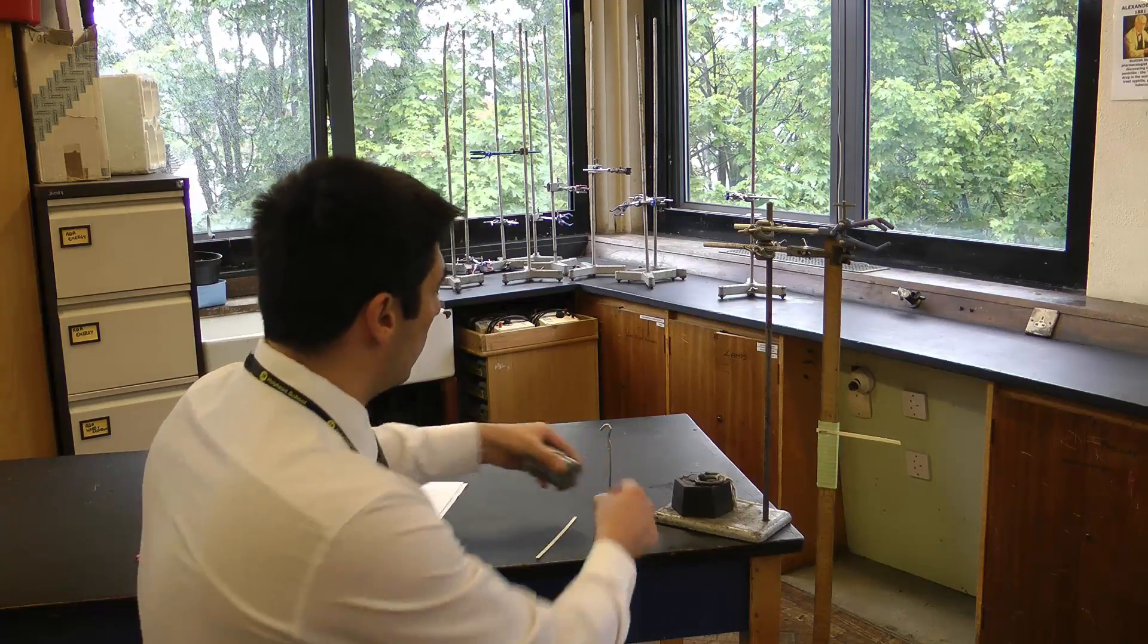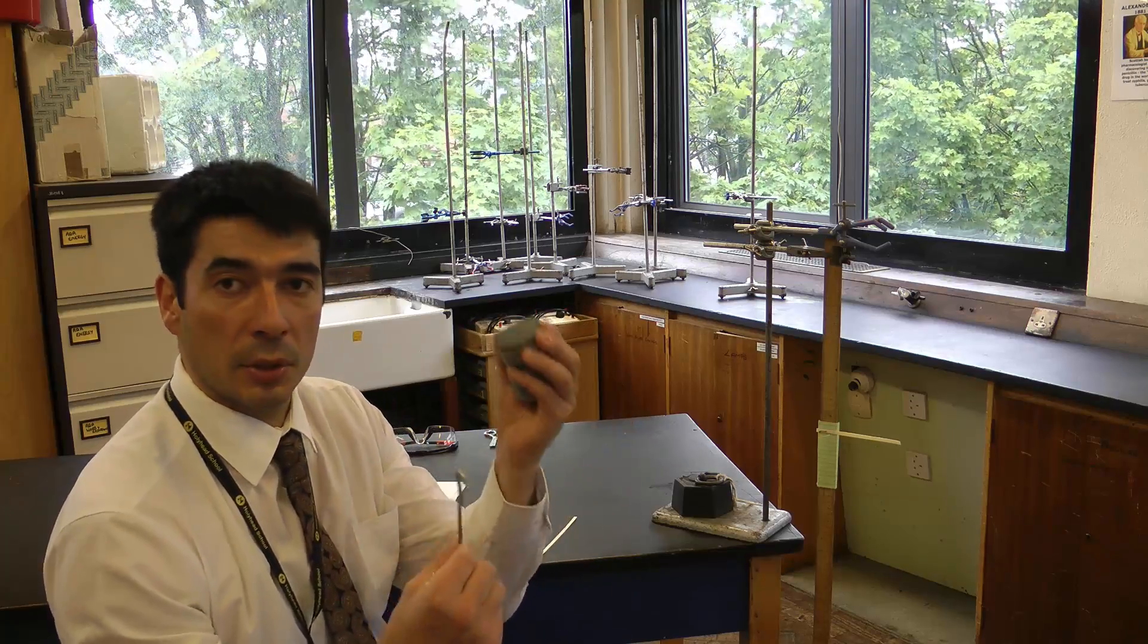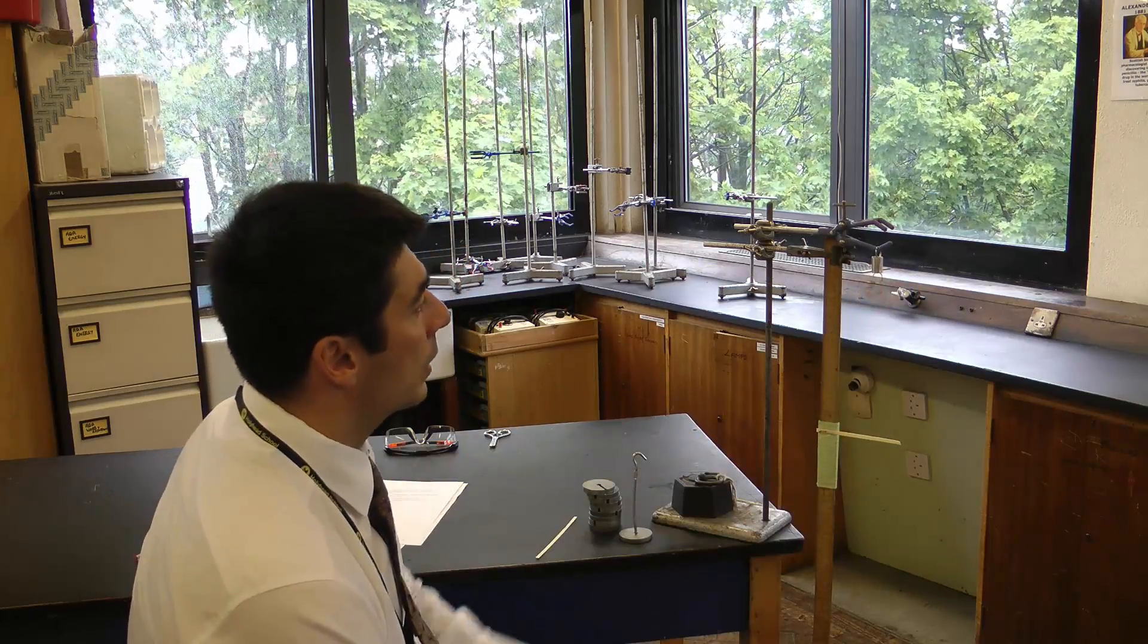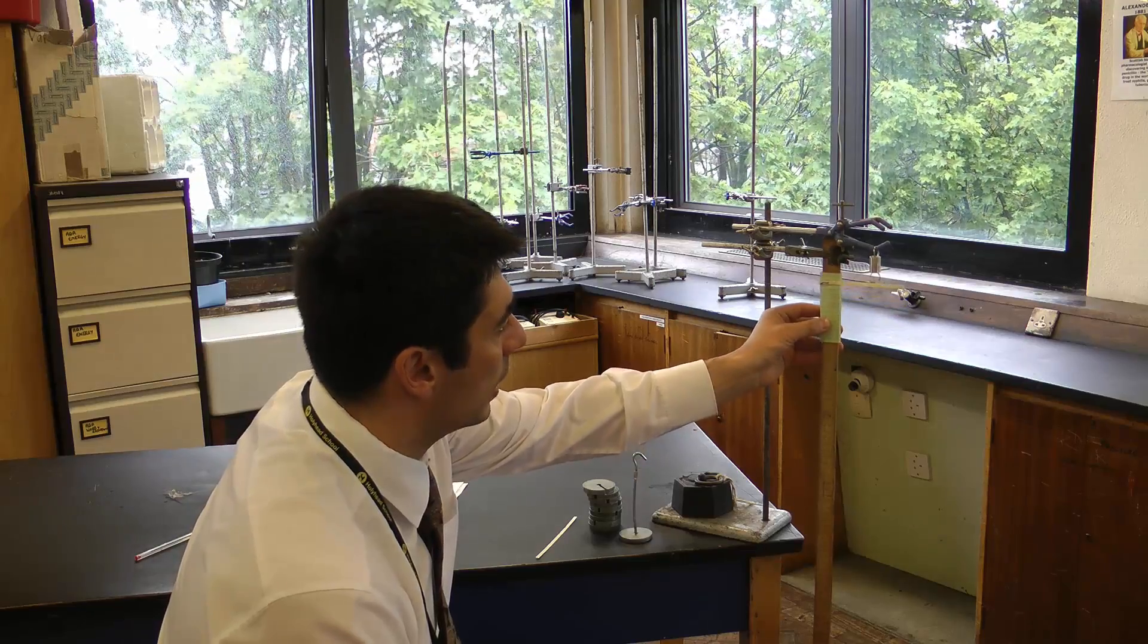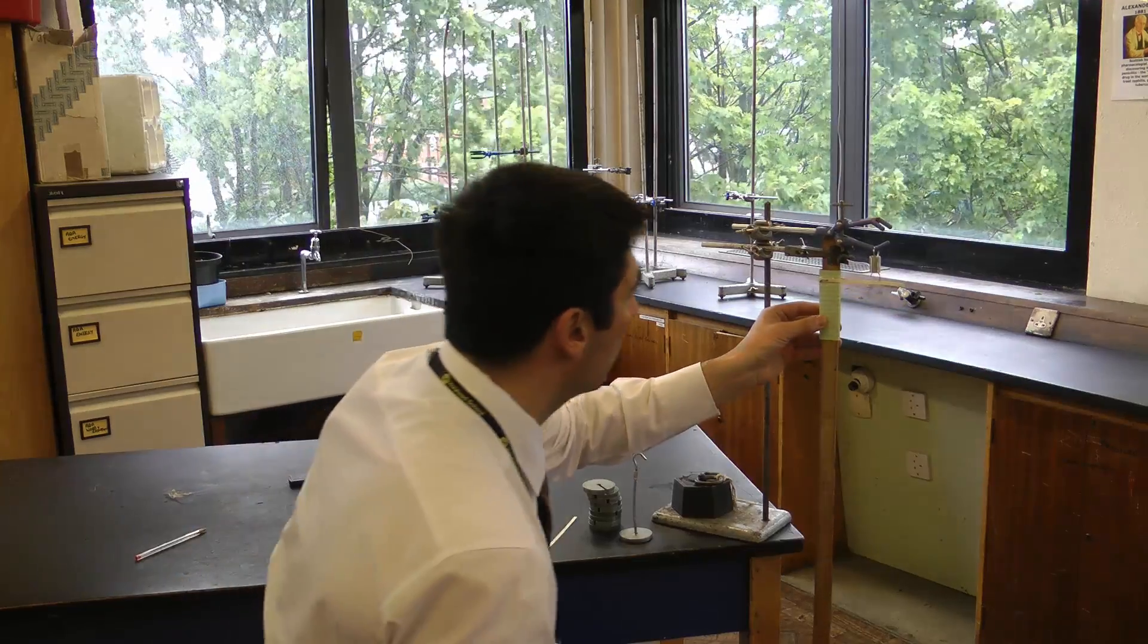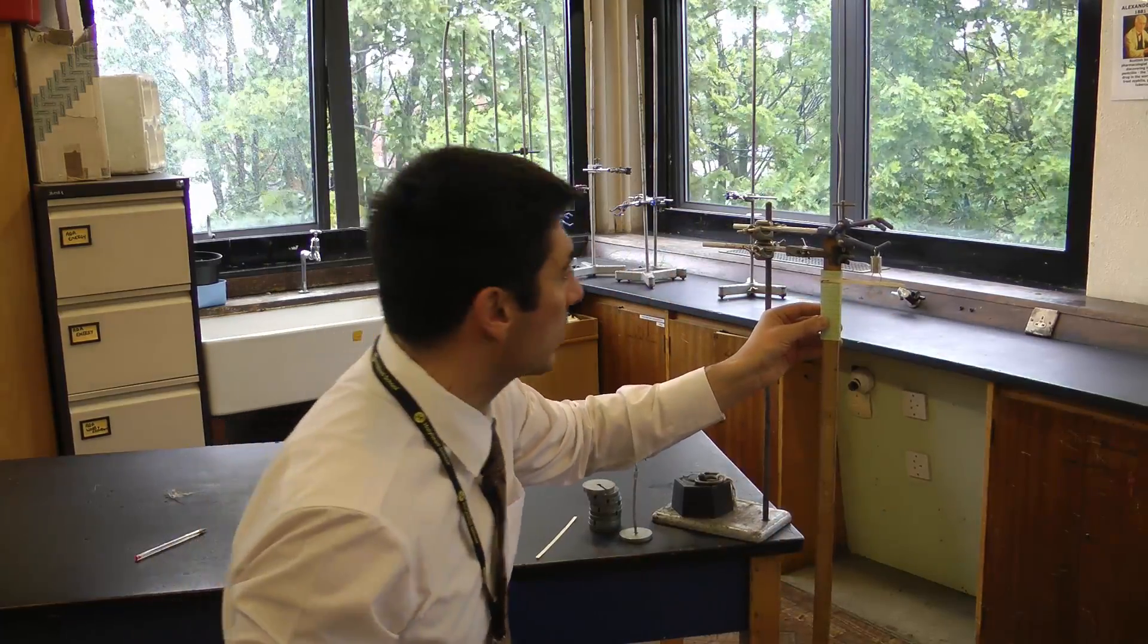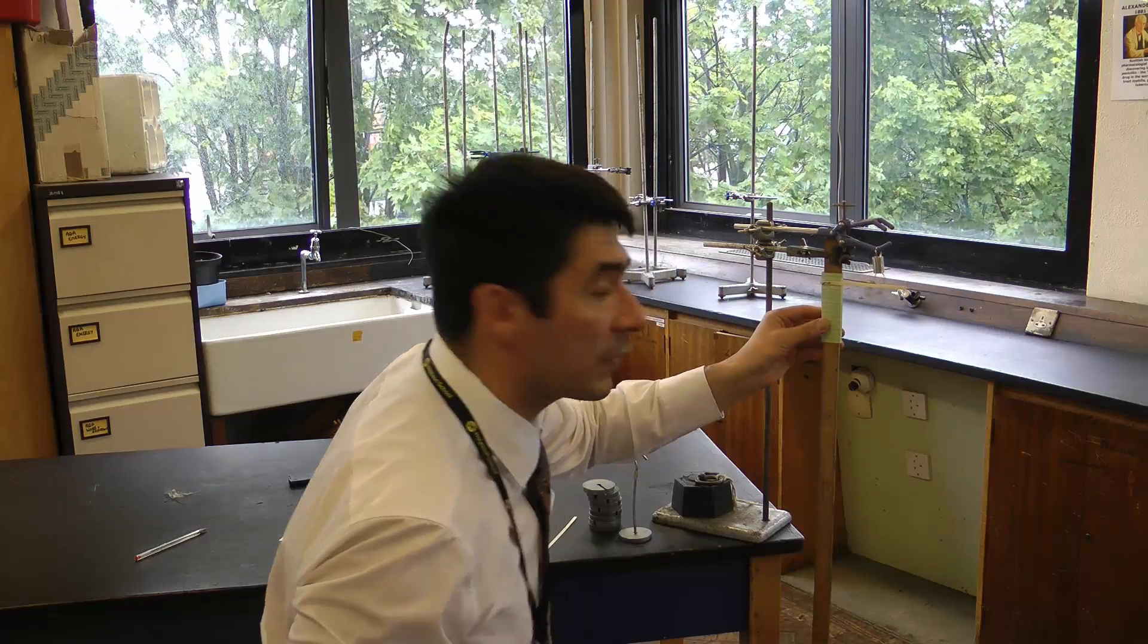Now we've got slotted masses with 9 additional 100 gram weights. Each 100 grams works out to 1 newton roughly pulling down. The spring's here, so I'm going to take the reading for the original length. I'm sliding this up and reading from the very bottom of the spring, and I'm going to read from the same point every single time. I'm getting a reading of 5 centimeters.